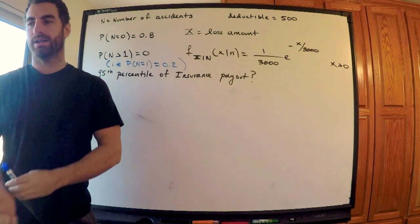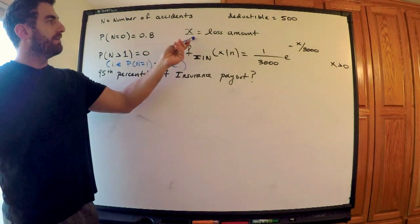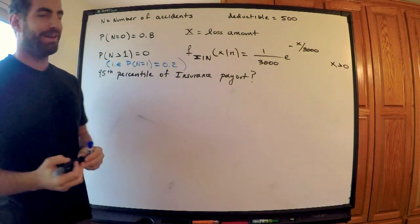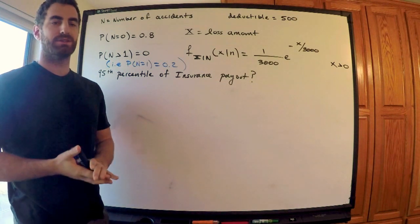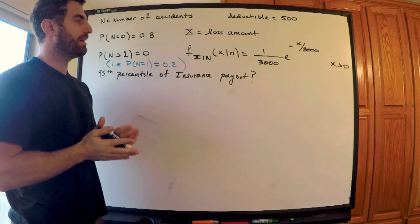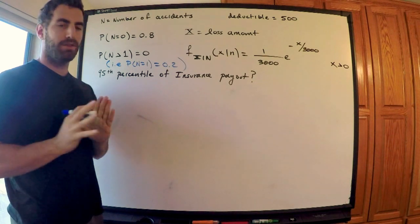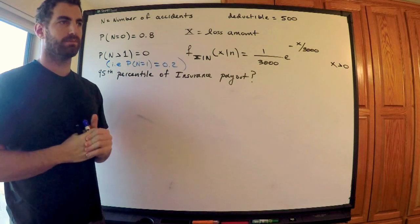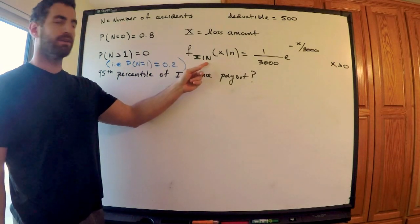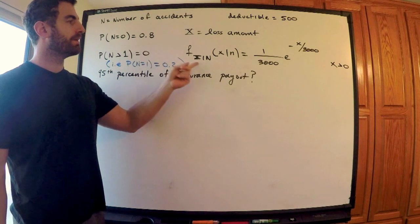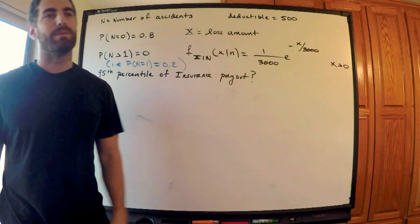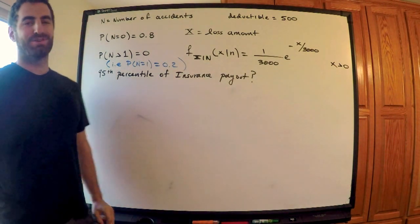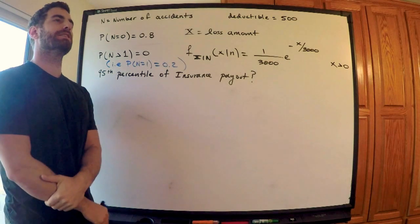The deductible is 500. The loss amount is the random variable X, and they give me a distribution: exponential with mean 3000. The important thing to note is that this is a conditional distribution given an accident — given N. X is greater than zero. I need the 95th percentile of the insurance payout.